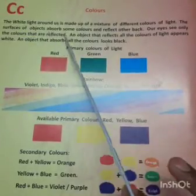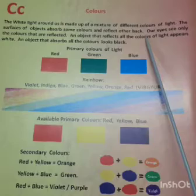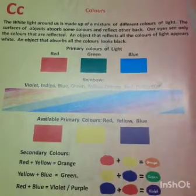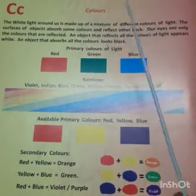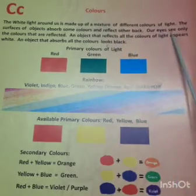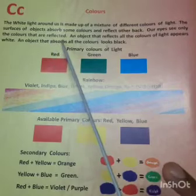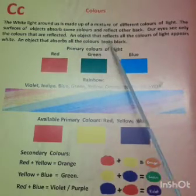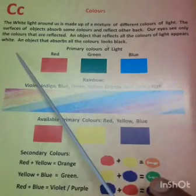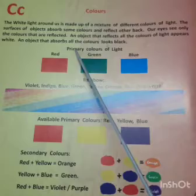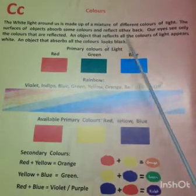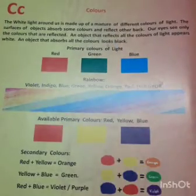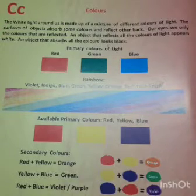The surface of objects absorbs some colors and reflects others back. It will absorb, or suck, some colors and a few colors will reflect back. Our eyes see only the colors that are reflected. An object that reflects all the colors of light appears white.